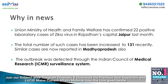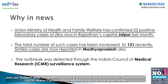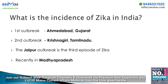Why it came in news: The Union Ministry of Health and Family Welfare confirmed 22 positive laboratory cases of Zika virus in Rajasthan's capital Jaipur last month. The total number of cases has since increased to 130, with similar cases now reported in Madhya Pradesh. The outbreak was detected through the ICMR surveillance system.